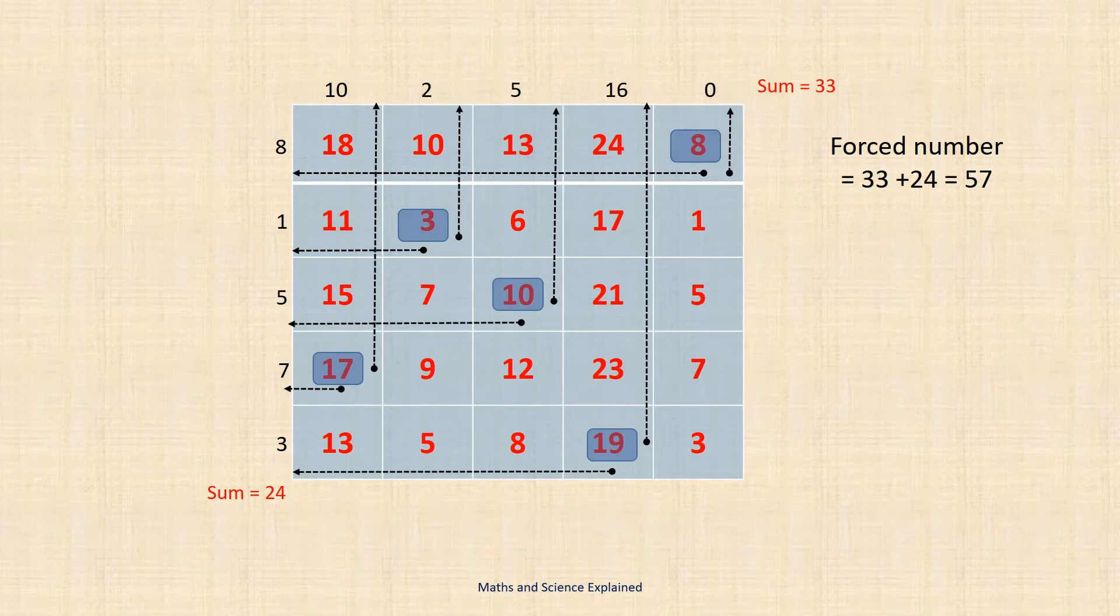Thus the coins cover up the sums of five different pairs of generating numbers which is the same as the sum of the 10 numbers that were used to derive the table. We will always force the number 57 from the process described.